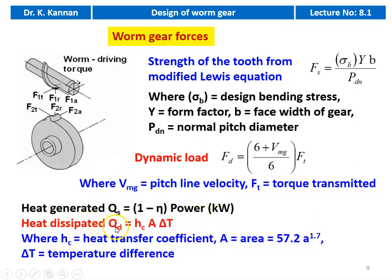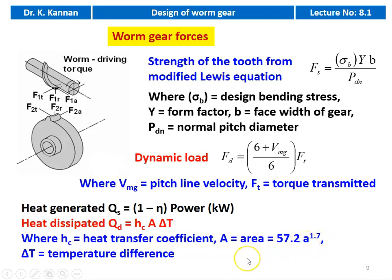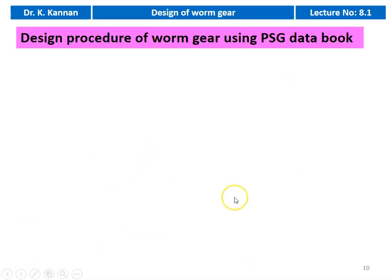The amount of heat dissipated: Qd = Hc × A × Δt, where Hc is the heat transfer coefficient, A is the area = 57.2 × A^1.7 where A is the center distance, and Δt is the temperature difference in the gear drive.